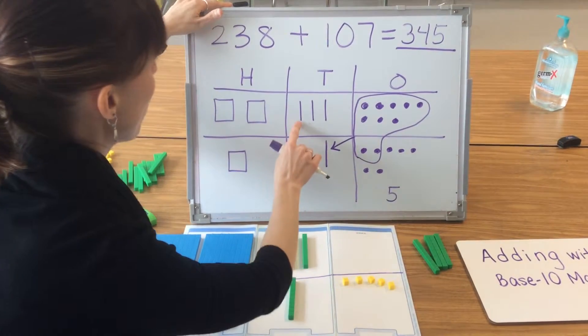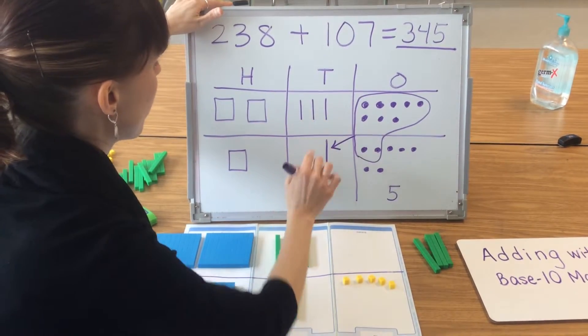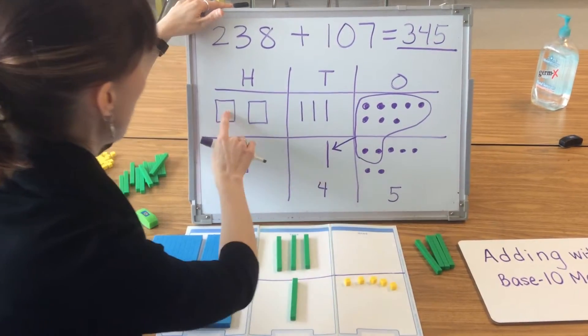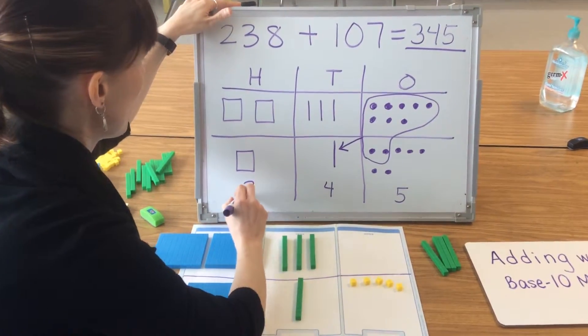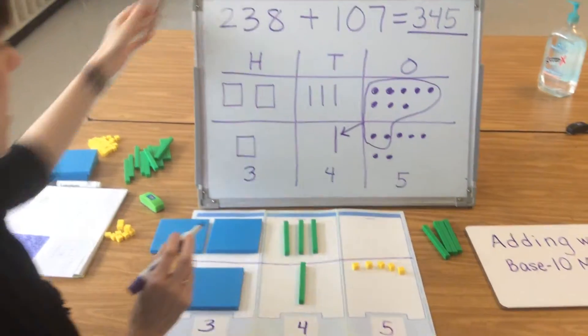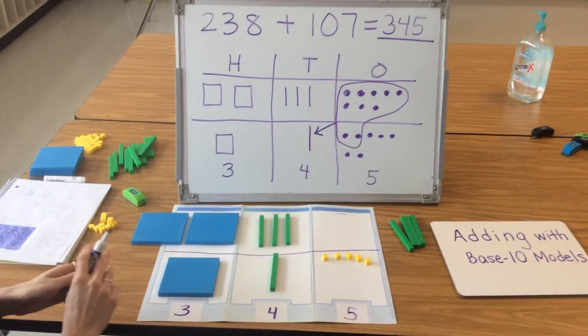I have 1, 2, 3, 4 tens and 1, 2, 3 hundreds. The total is 345.